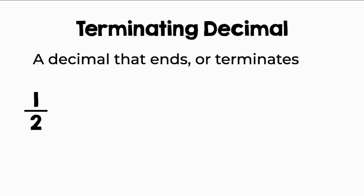Is one-half a terminating decimal? One divided by two equals 0.5. Therefore, one-half in decimal form is a terminating decimal.